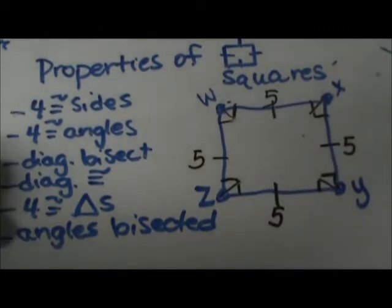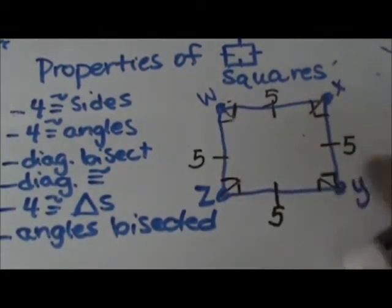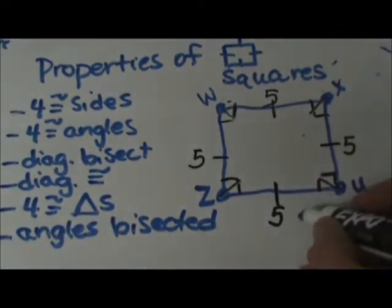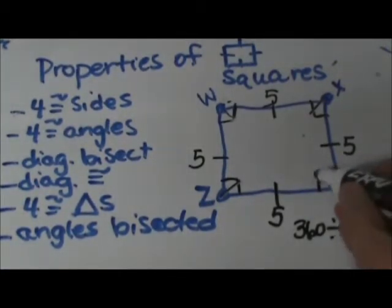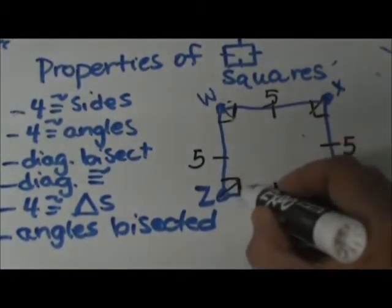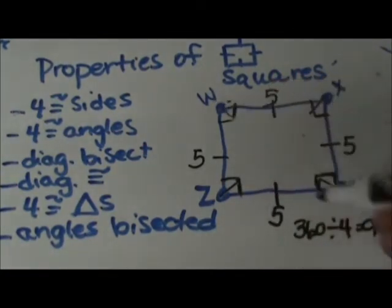Then a second property is that all four angles are congruent. We know that in a quadrilateral there are 360 degrees, so if we divide those into four equal parts, each angle is 90 degrees. We are going to mark those as right angles.